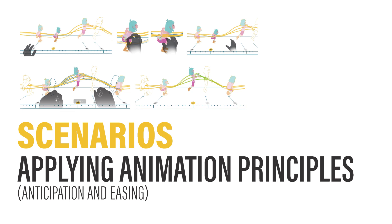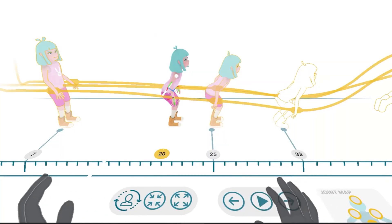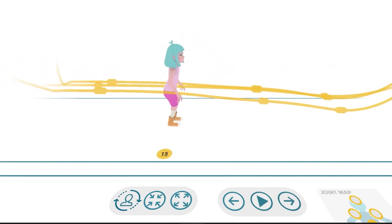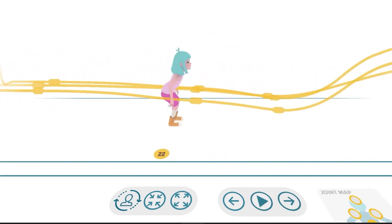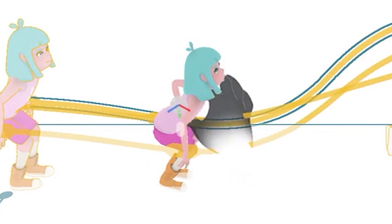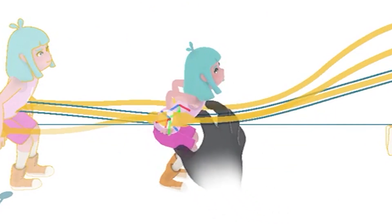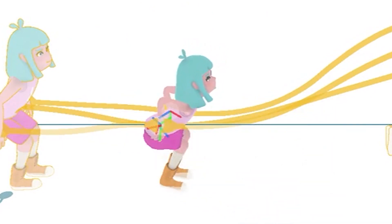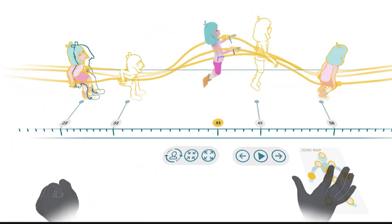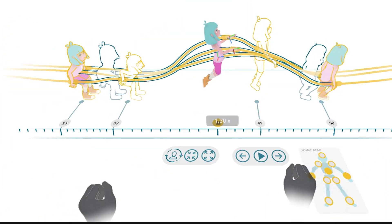Finally, we show how Time Tunnel can be used to apply animation principles. In this case, anticipation and easing. Here, we see the character jumping. To exaggerate the motion and create anticipation, one can manipulate the pose so it crouches further down. One can then use gestures to retime the animation and change the speed. In this case, it speeds up.